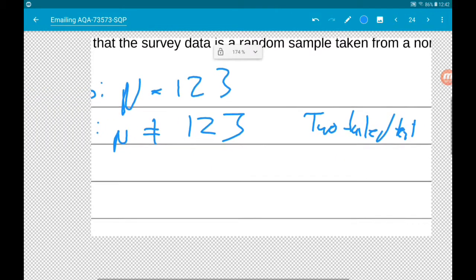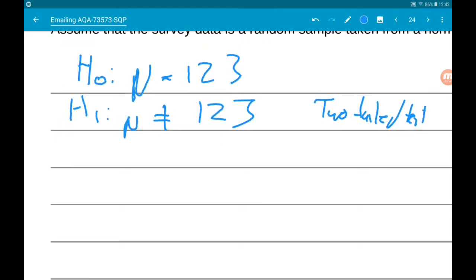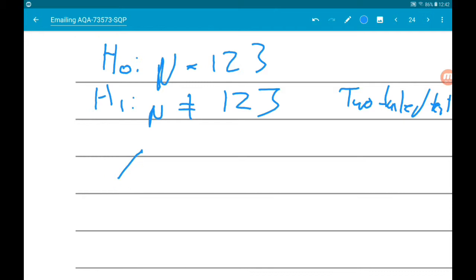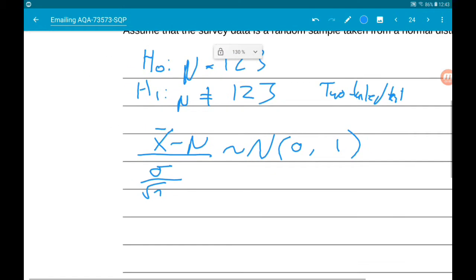Now, in the formula booklet, you are given the distribution of a sample mean. We are told that x bar minus mu over sigma over root n is normally distributed with a mean of zero and a variance of 1. Now, what we can do is work out the value of x bar minus mu over sigma over root n.